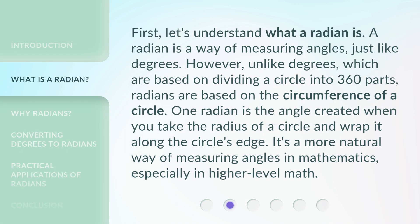First, let's understand what a radian is. A radian is a way of measuring angles, just like degrees. However, unlike degrees, which are based on dividing a circle into 360 parts, radians are based on the circumference of a circle.